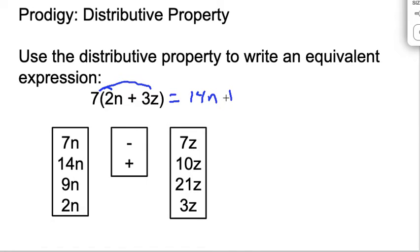And that would give us, we're going to add to that, remember the same symbol that's in there is the same symbol we use here. 7 times 3z would give us 21z. So we end up using, I like to draw this in there to make sure I'm not missing.